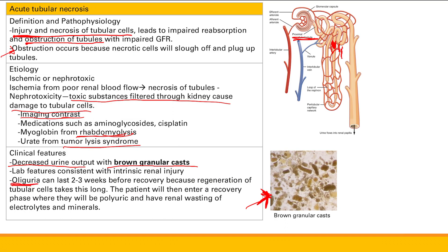You'll have oliguria — decreased urine output — for two or three weeks, because that's how long it takes for tubular cells to recover and allow improved kidney function. After that, once tubular cells have regenerated, the patient enters a recovery phase and will be polyuric, meaning they pee a lot more than usual. You also get renal wasting of electrolytes and minerals, so you need to watch out because their electrolytes will be lower and may need to be replenished.